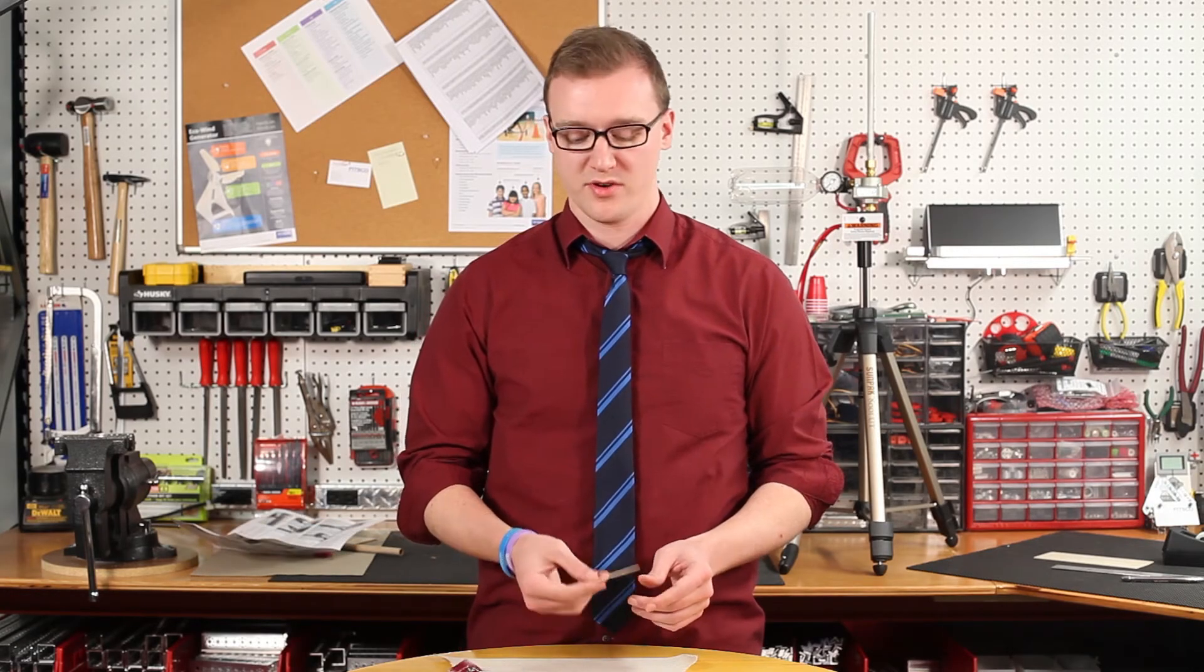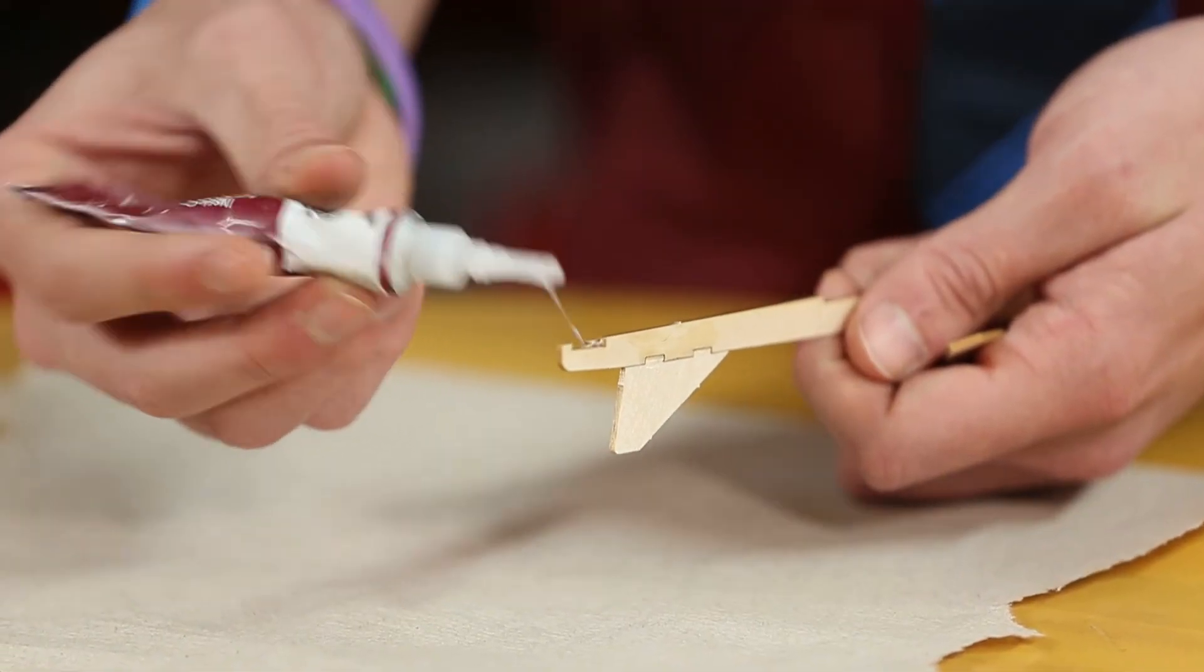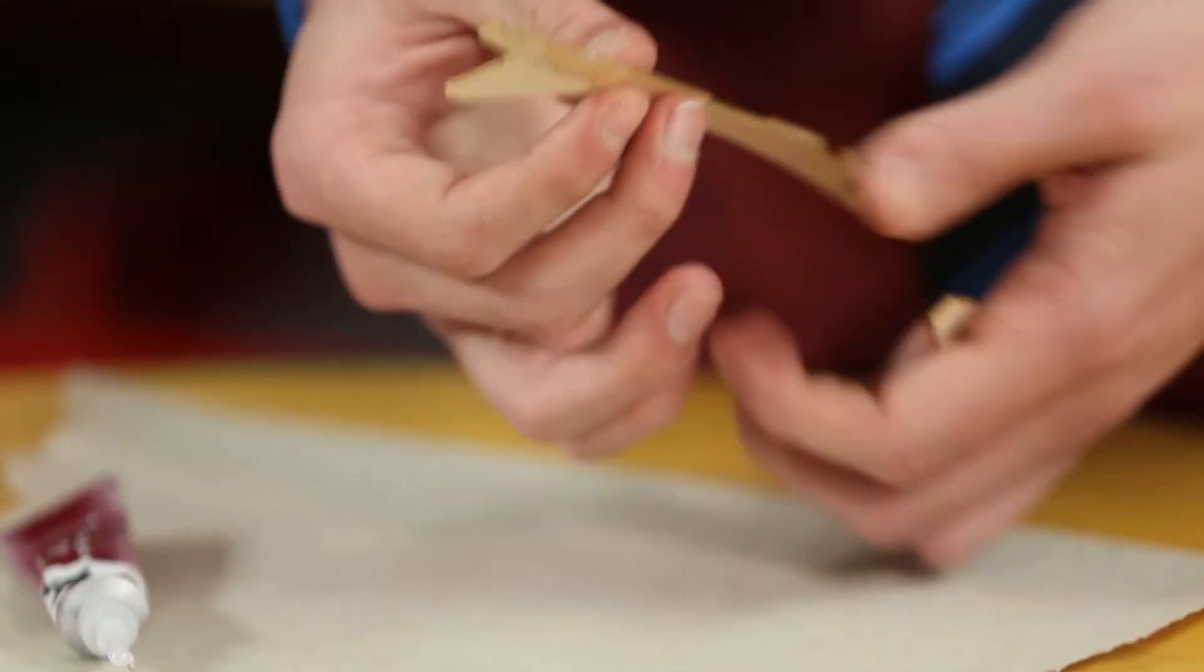For the next part, you're going to want to take the stab and glue it into the back notch on the fuselage.